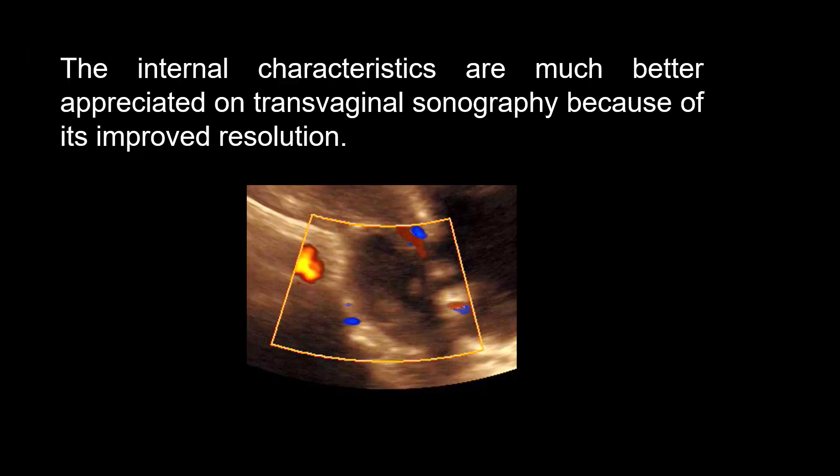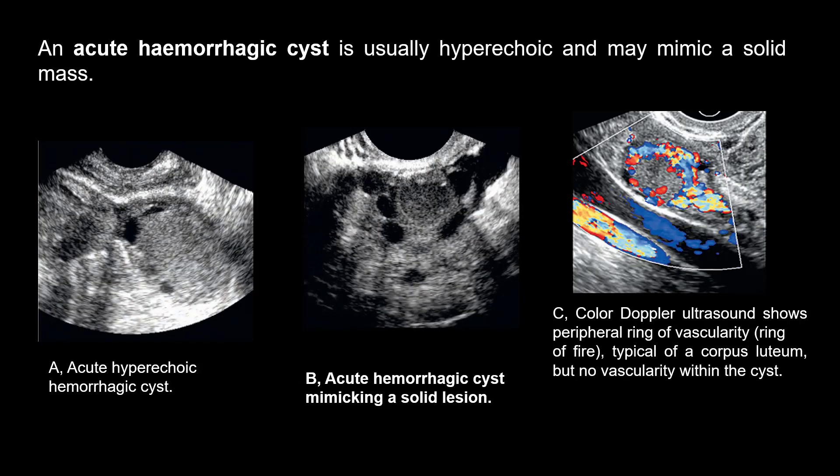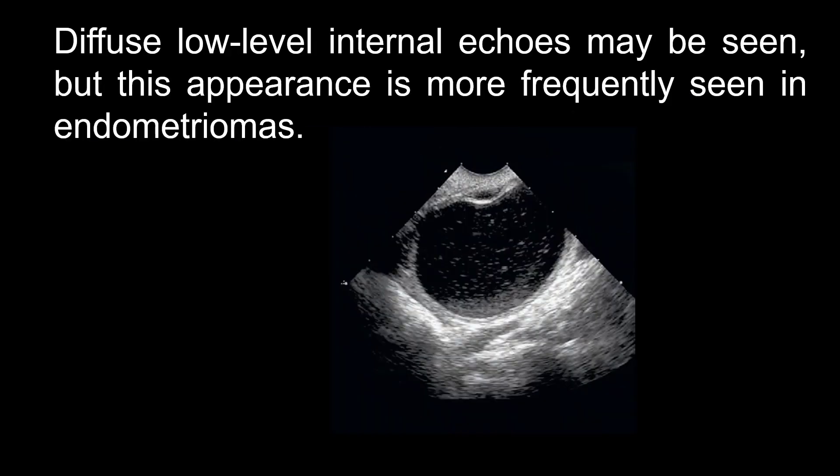The internal characteristics are much better appreciated on transvaginal sonography because of its improved resolution. An acute hemorrhagic cyst is easily hyperechoic and may mimic a solid mass. Diffuse low-level internal echoes may be seen, but this appearance is more frequently seen in endometriomas.